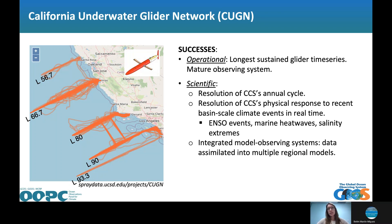Scientifically, the CugN has been a success in that it has helped resolve in high resolution the CCS's annual cycle, as well as the CCS's physical response to a variety of recent basin-scale climate events in real time. The climate phenomena of interest include El Niño, La Niña events, marine heat waves, and recent salinity extremes. It's also a very useful dataset for integrated modeling and observing systems.